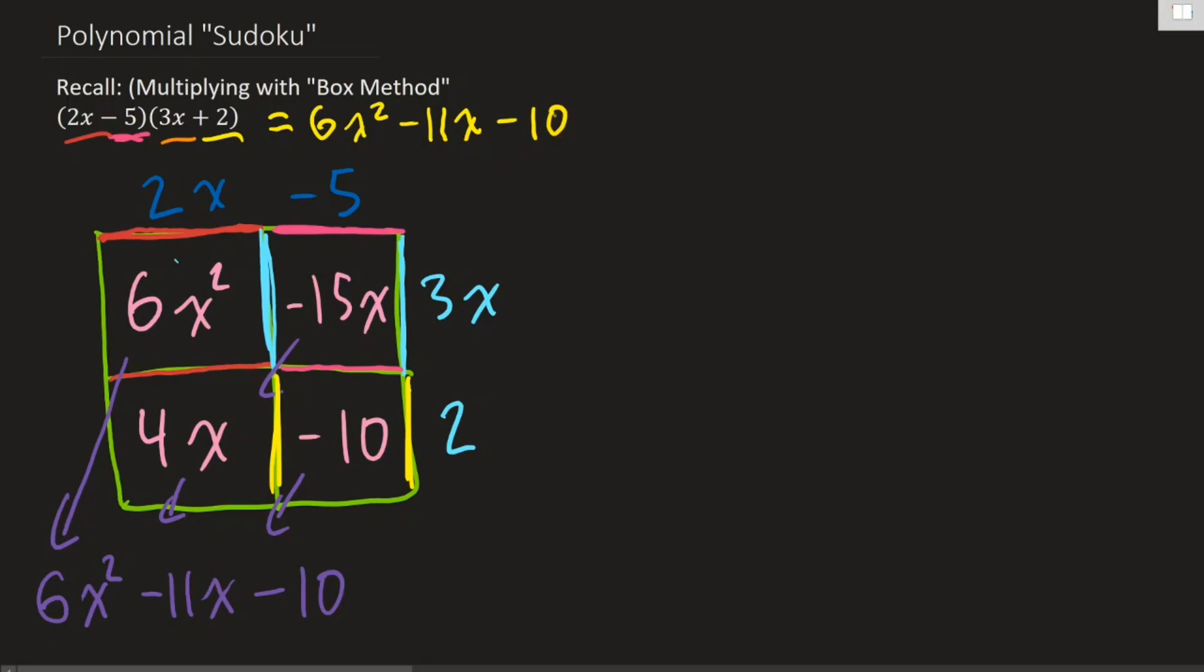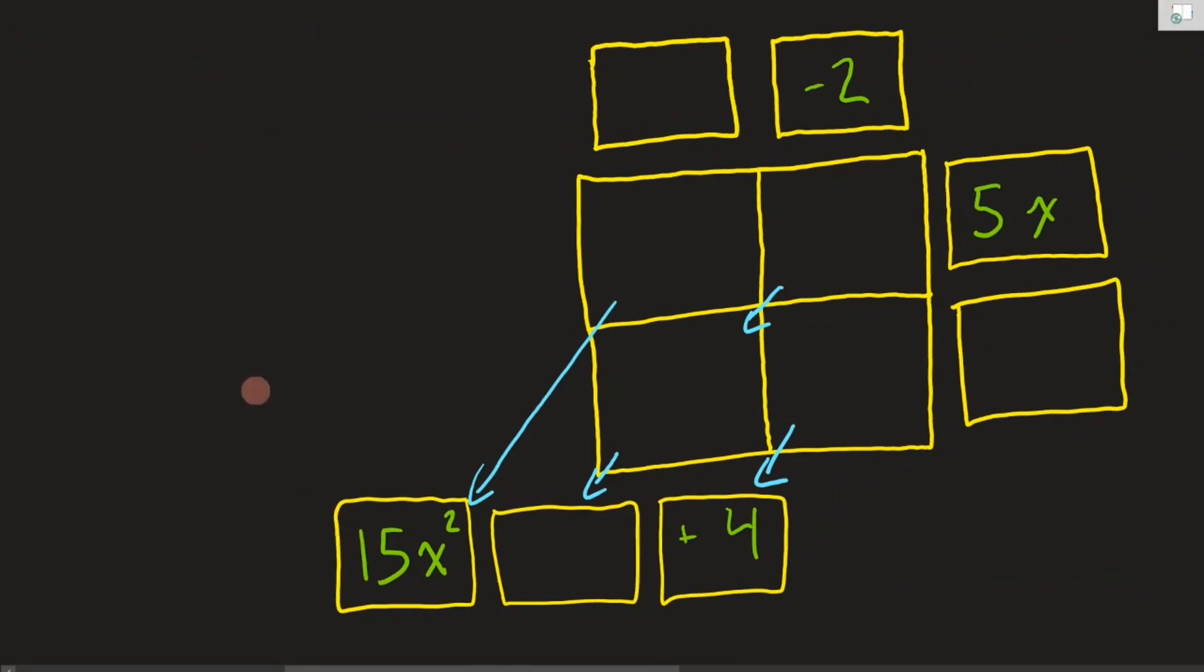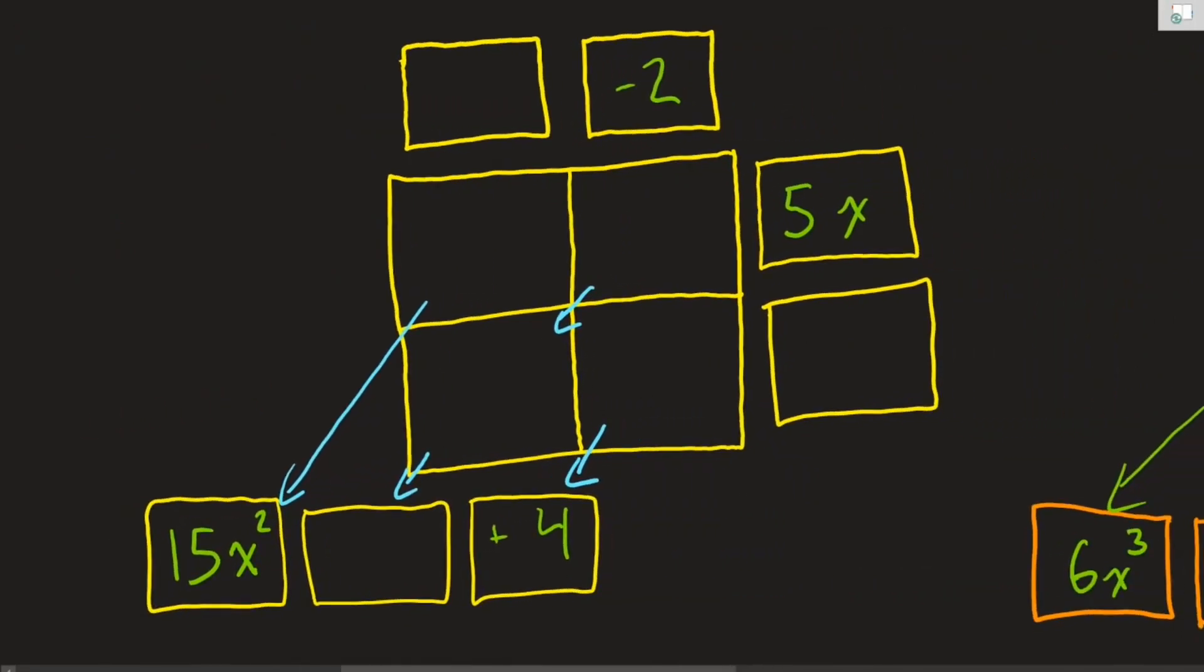Now polynomial sudoku is kind of like that, but instead of just boring, always having the edges filled in and then working your way down, we are going to have blanks in different spots. And depending on where your blanks are, you need to sort of work backwards, forwards, upside down, whatever to figure out what you can find.